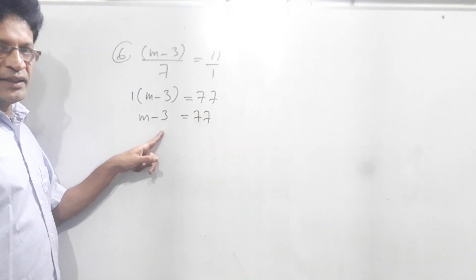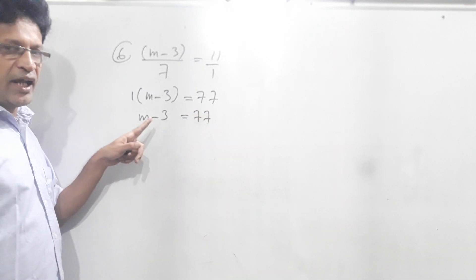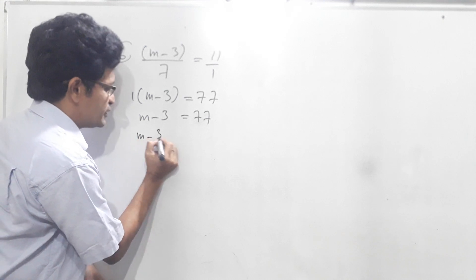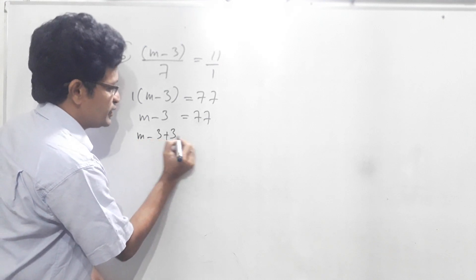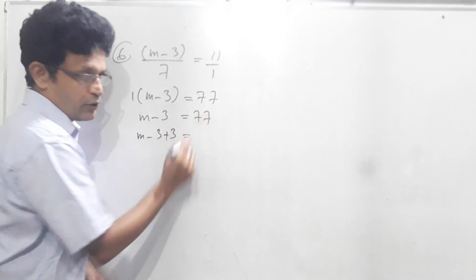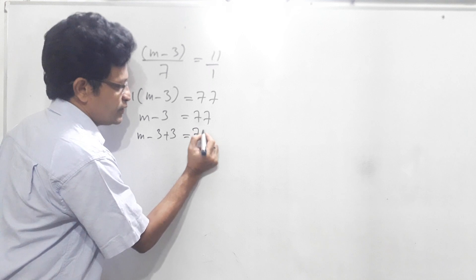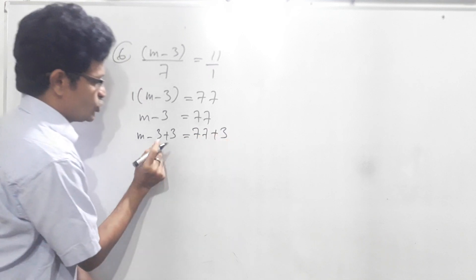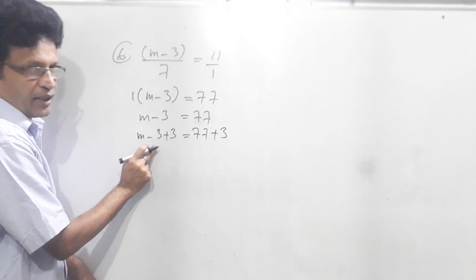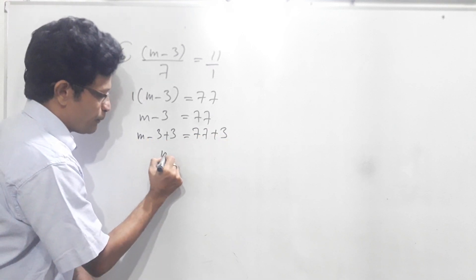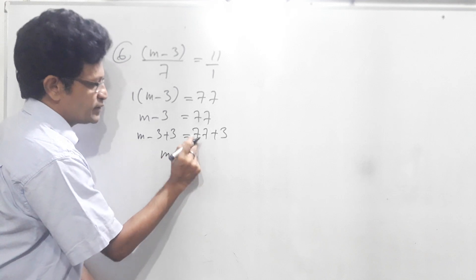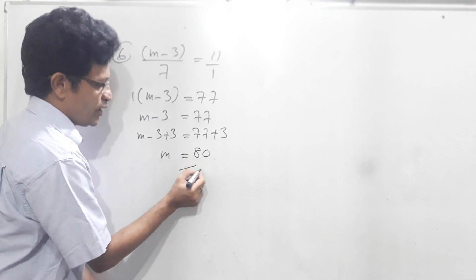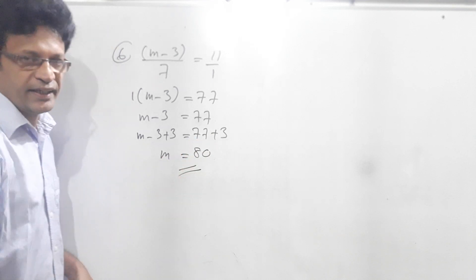To cancel this minus 3 we have to add plus 3 on this side. Then m minus 3 plus 3 — this side also add another 3, so 77 plus 3. Plus 3 and minus 3 will get cancelled. Here we have m. 77 plus 3 is 80. So m equals 80.